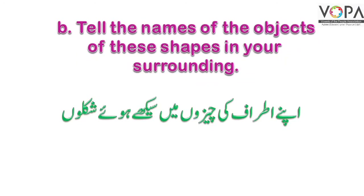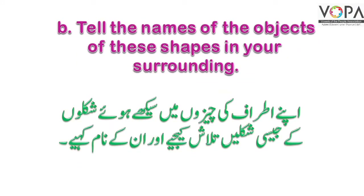अपने अत्राफ की चीजों में सीखे हुए शकलों की जैसी शकले तलाश कीजिए और उनके नाम कहिए। प्यारे बच्चों, हमने इसके पहले square, triangle, rectangle, circle, oval इस तरह के shapes सीखे हैं। तब ये shapes हमारे surrounding में, हमारे अत्राफ में, कौन कौन सी चीजों में हमें इनकी शकले नजर आती है, वो हमें देखना है।